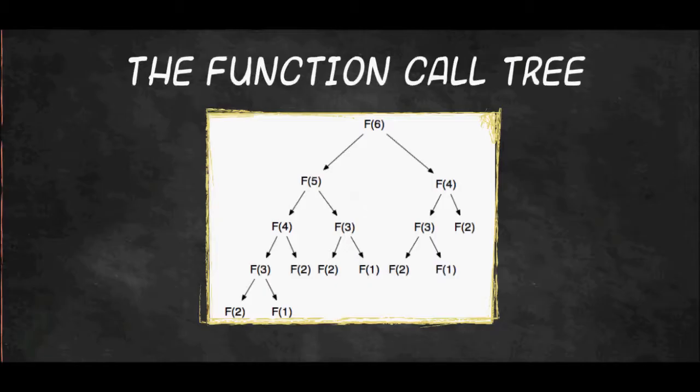Else, return F(n-1) plus F(n-2). So, this completes our recursive function. As you can see, it is, by definition, F(n) is equal to F(n-1) plus F(n-2).